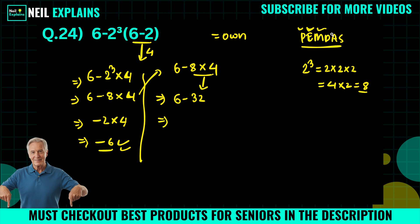Next is subtraction. 6 minus 32 equals minus 26.